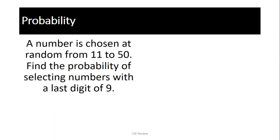Ayun, ito pa. Sabi, a number is chosen at random from 11 to 50. Find the probability of selecting numbers with the last digit of 9. So, again, same rules apply. And this time, I want you to answer this without me explaining muna. So, hit pause now.